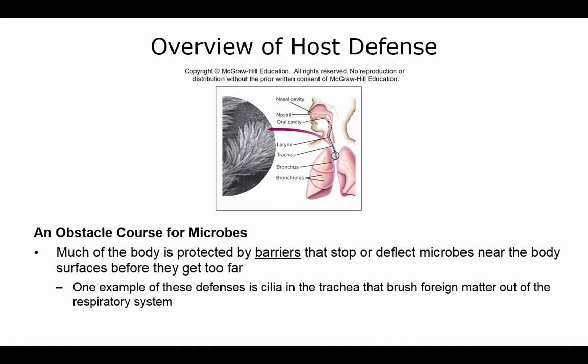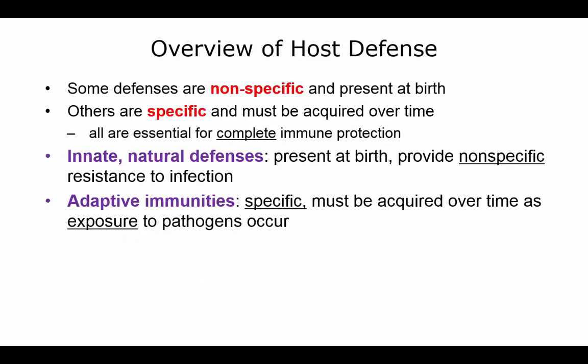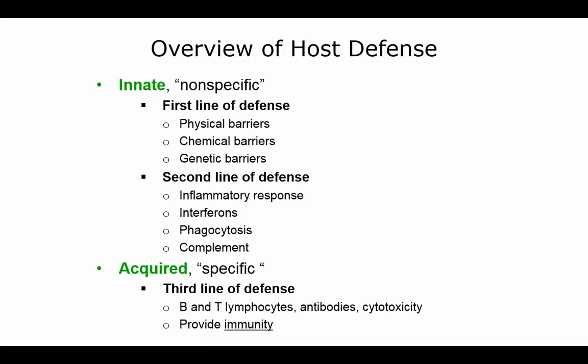Some defenses are non-specific and are present at birth, giving you natural defenses against microbes. Others are more specific and have to be acquired over time — you need these for complete immune protection. You get these through exposure to pathogens, which causes you to develop adaptive immunities. Innate means non-specific.